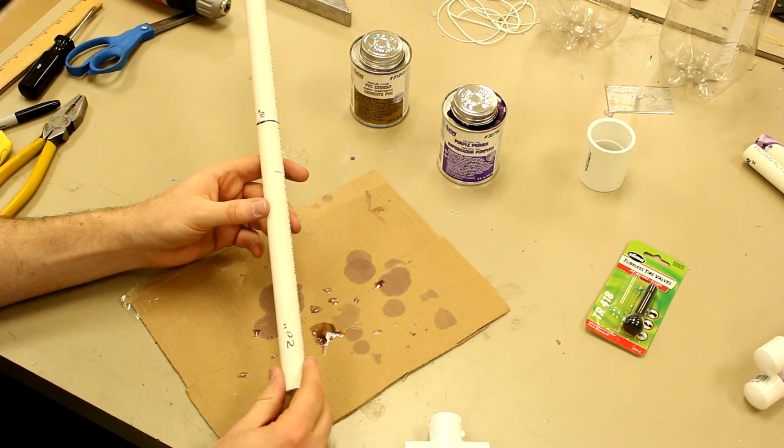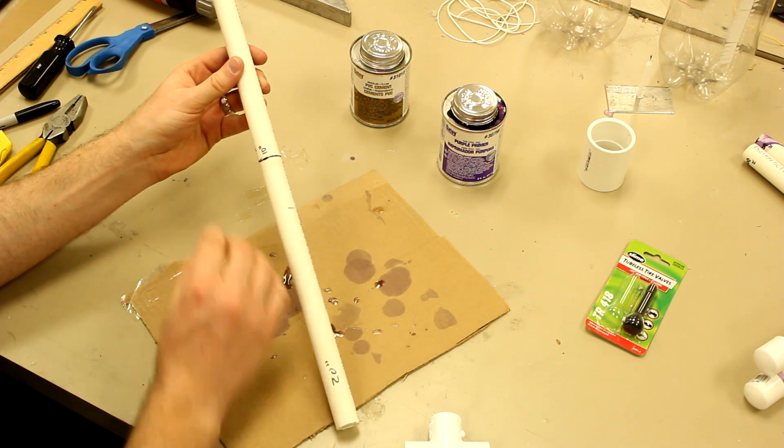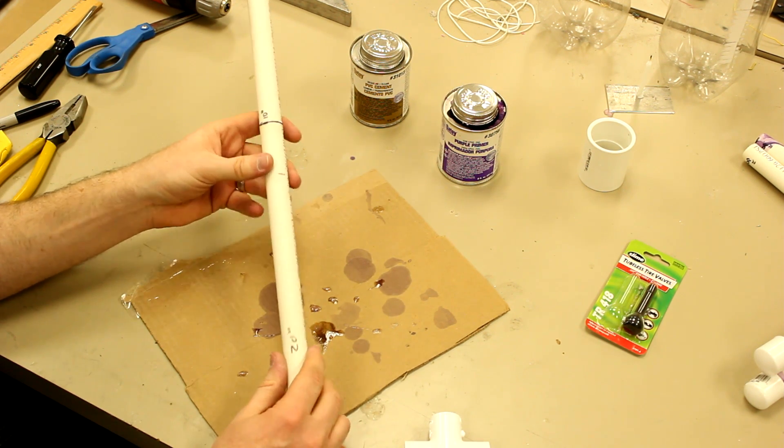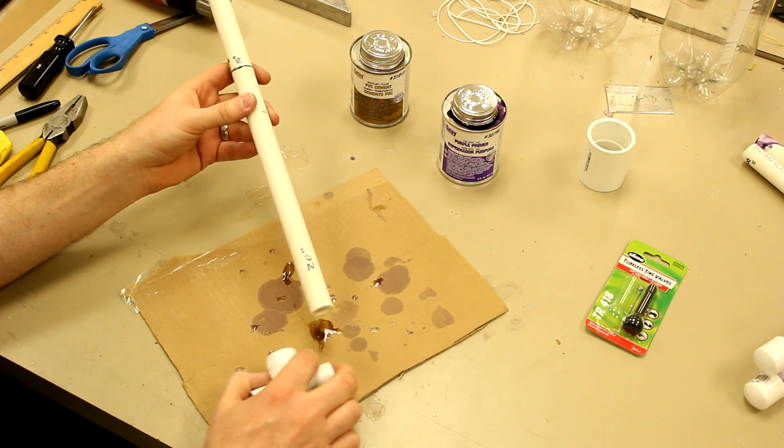Here we have our long section of pipe. And we just showed you how to put the bulge in it. Now that we've done that, we want to continue building our launch platform.